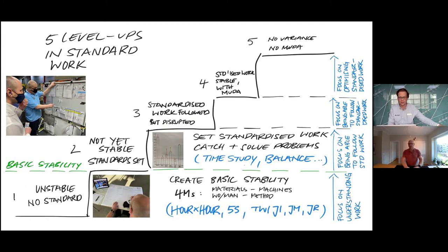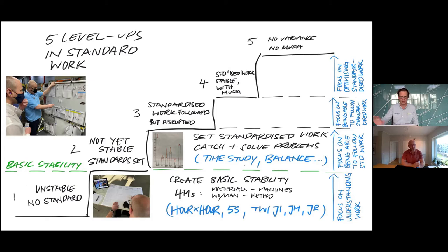If you start out like Mario's line with a lot of red pictures — lots of interruptions to the daily floor — you can typically see the supervisor shooting around trying to put out fires. You want to get into basic stability where the supervisor can step out of that daily grind and think about improvement. If you haven't got that, don't even start with standardized work. There's absolutely no point — it's a piece of paper that'll just sit there, and the capability is just not there.